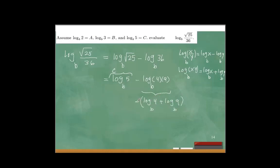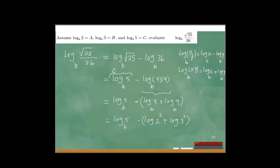This minus sign belongs to both terms, so I'm going to use parentheses. Log of 4 — I want to make it look like log of 2, so this would be log of 2 squared. And log of 9 — I want to make it look like 3, so it would be 3 squared. Now I need to use the power property: log of x to the power of n equals n times log x.